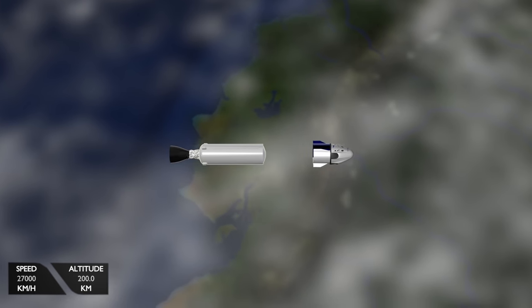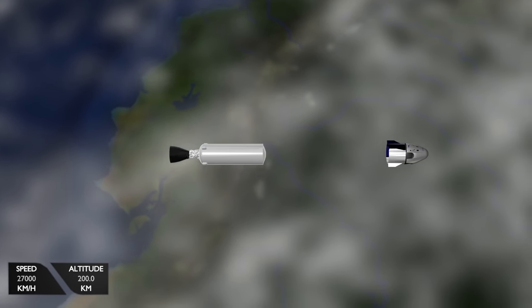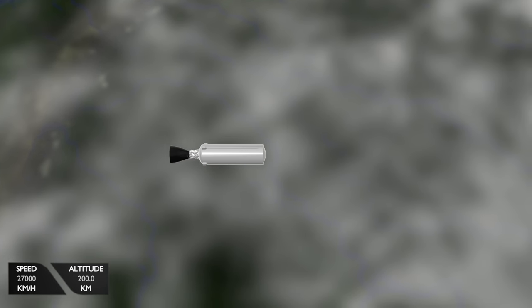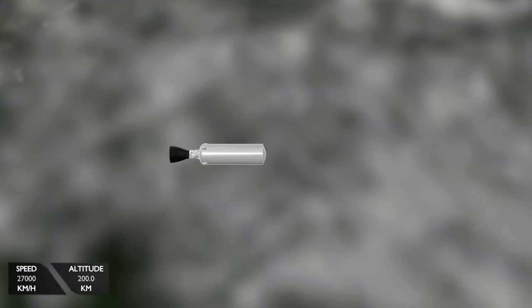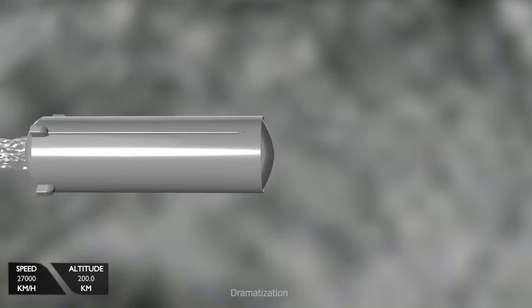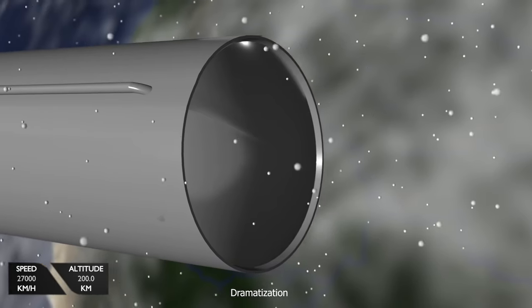After stage separation at around 200 kilometers in altitude, while the Dragon capsule continues to raise its orbit to rendezvous with the ISS, the second stage is in a decaying orbit that is projected to last only tens of hours as it collides with the air particles, slowing it down and lowering its orbit.